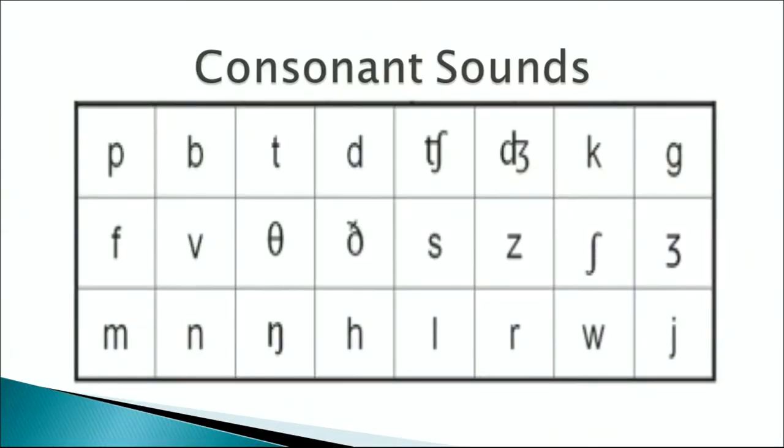Looking at the consonant chart: the first sound is p as in pot — it is a bilabial sound, produced when the lips come together. Then b as in bat, t as in table, and d as in dog.